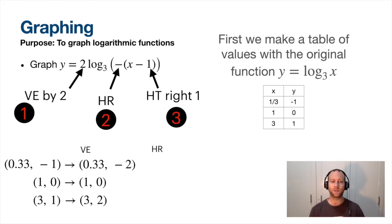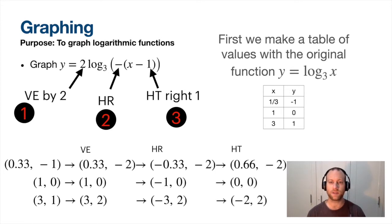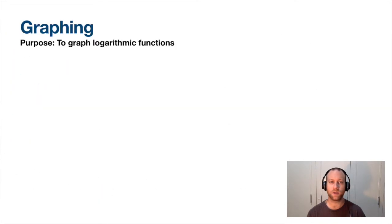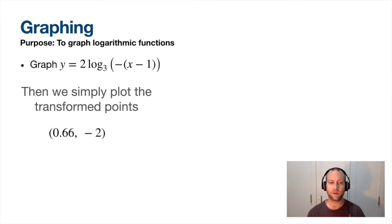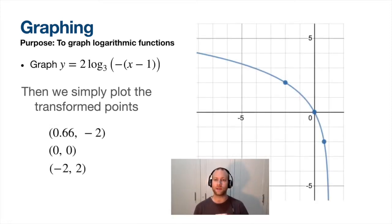Do a horizontal reflection - make all the x values negative. Then a horizontal translation - add 1 to each of the x values. So here are the resulting points. We take those points and plot them on a graph and connect the dots. Here is our equation again - arrows at the end.